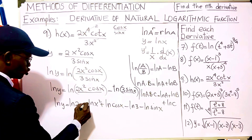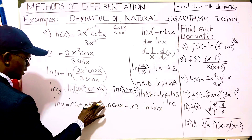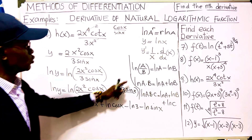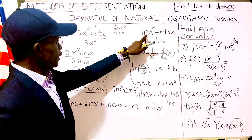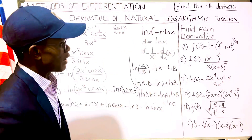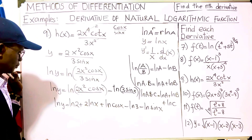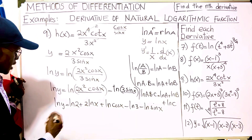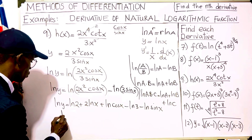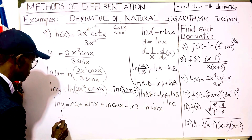We bring the 2 down because of the rule: ln(a^r) equals r·ln(a). Now we can find the derivative. The first term gives us 1/y · y prime, because y is the name of the function so we must always attach y prime.